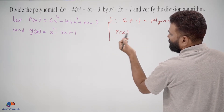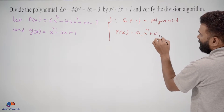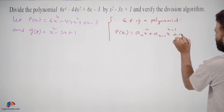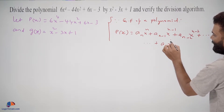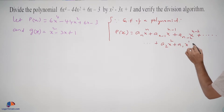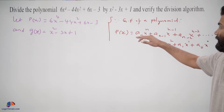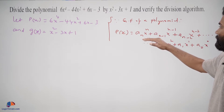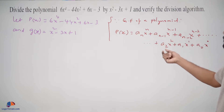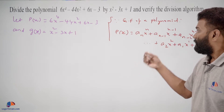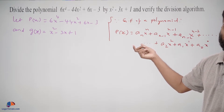Let p(x) be a polynomial in x: a_n·x^n plus a_(n-1)·x^(n-1) plus a_(n-2)·x^(n-2) and so on, plus a_2·x² plus a_1·x plus a_0. Here n is a positive integer, x is the variable, and a_0, a_1, a_2, and so on are the coefficients — these are constant variables.